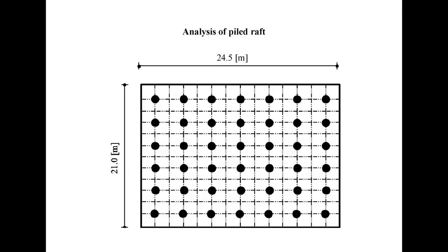An example of pile draft is selected to illustrate some of the essential features of ELBLA. A 42-pile draft is considered with all piles equal in diameter and length: diameter 0.9 meter, pile length 20 meter, spacing between piles 3.5 meter. The raft with piles is analyzed as a pile-raft foundation under a uniform load of 150 kN/m² acting on the raft, with raft dimensions of 21 by 24.5 meter.